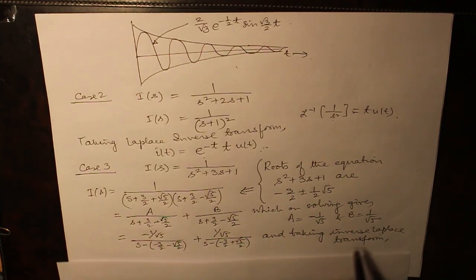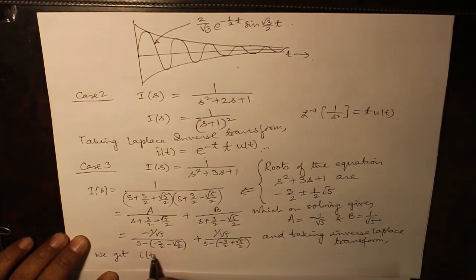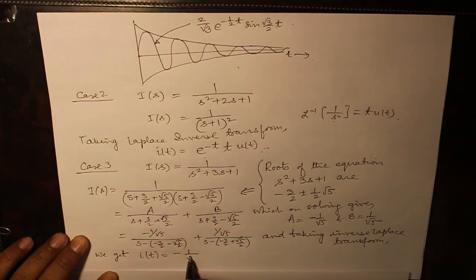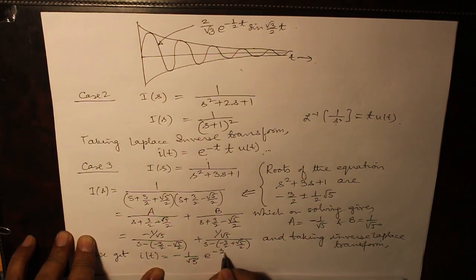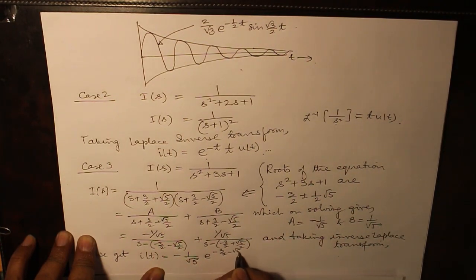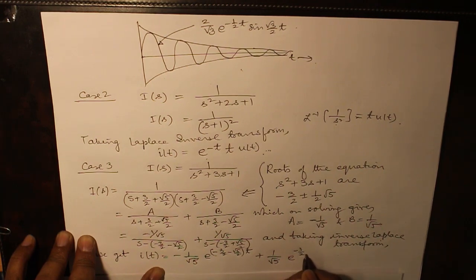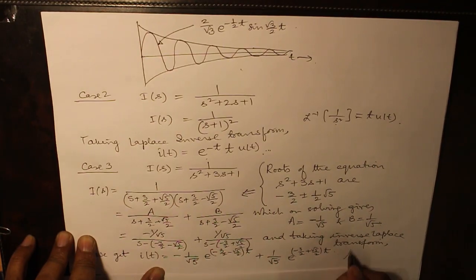Substituting these values here and taking inverse Laplace transform we obtain it as being equal to minus 1 over √5 e raised to the power (-3/2 - √5/2) into t plus 1 over √5 e raised to the power (-3/2 + √5/2) t. This is the answer.